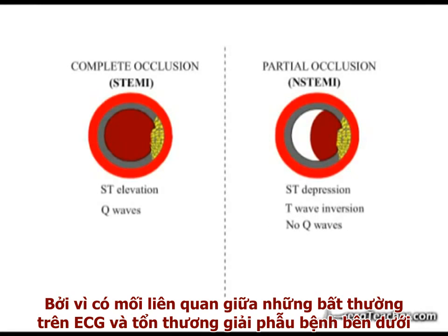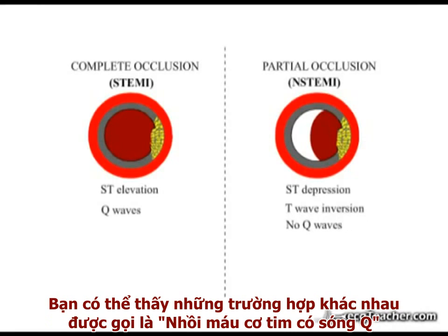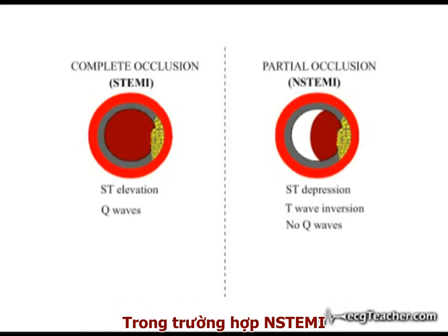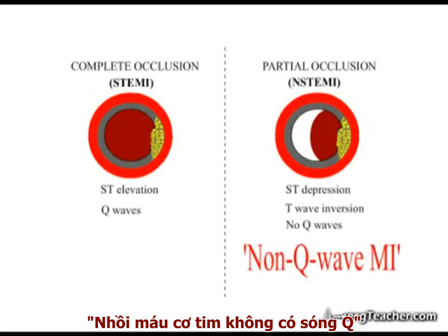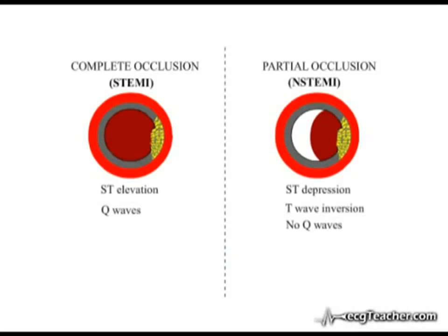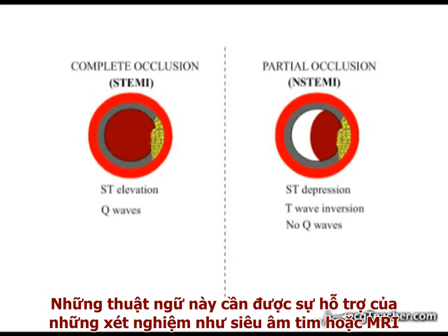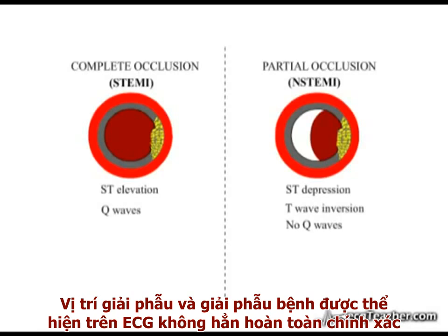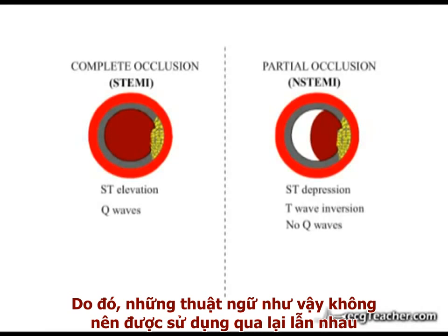Because of these associations between ECG abnormalities and pathological findings, these differing situations may be referred to as Q wave MI, full thickness infarction, or transmural infarction; or in the case of non-ST elevation MI, non-Q wave infarction, partial thickness, or subendocardial infarction. While these designations do have meaning in the presence of further supporting evidence such as ECHO or cardiac MRI, the anatomical and pathophysiological correlations they imply are far from perfect, and the terms should not be used interchangeably.